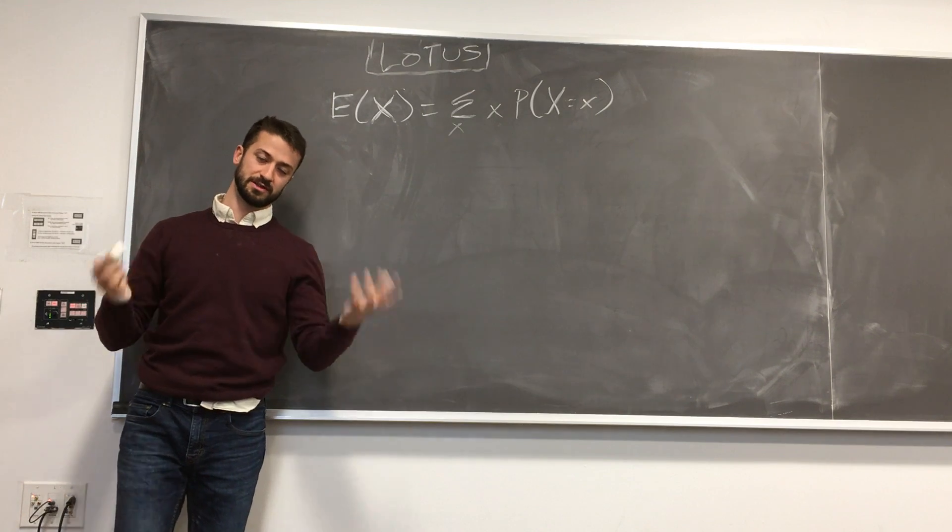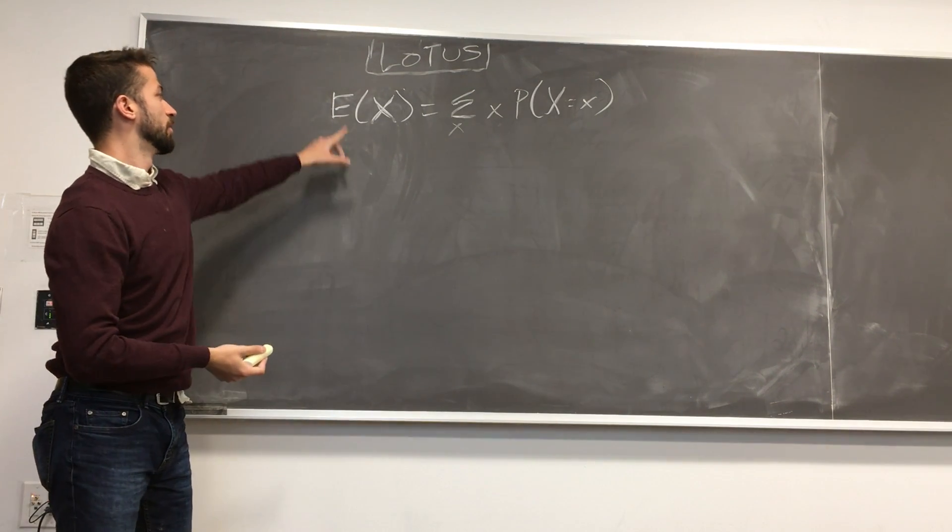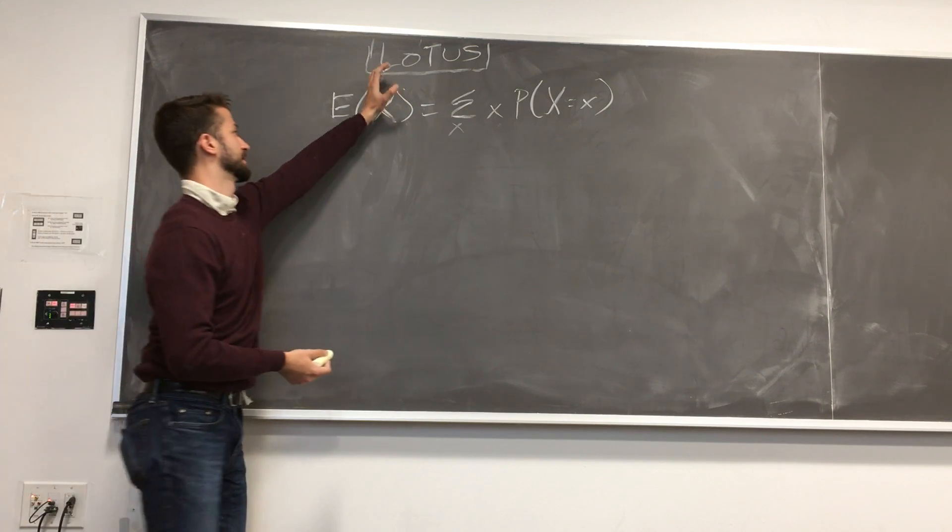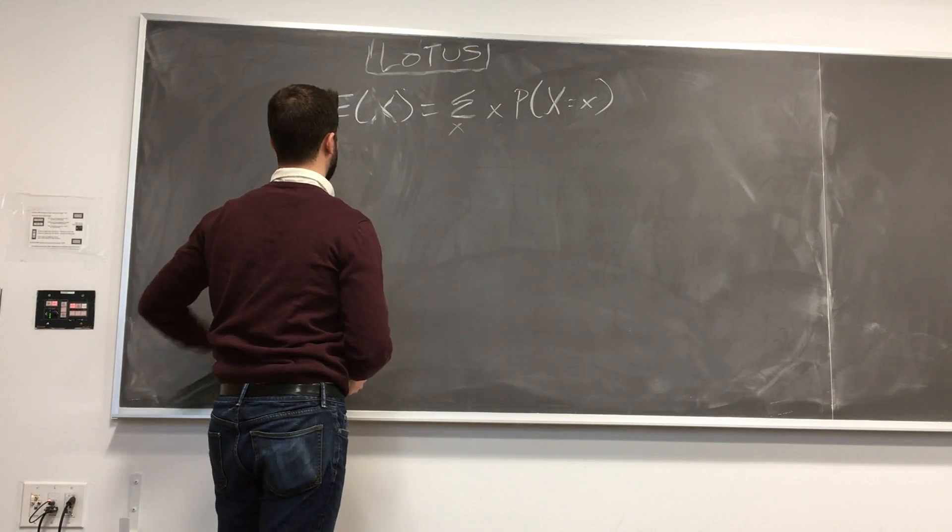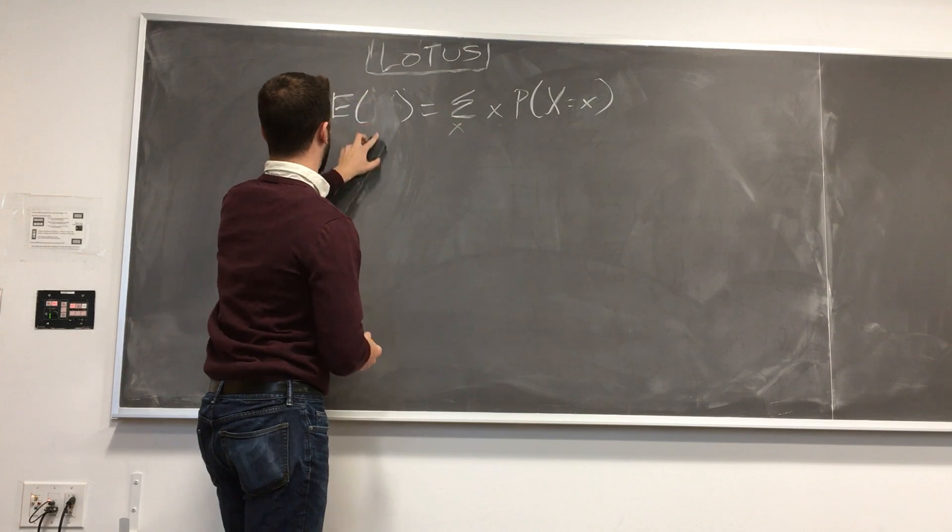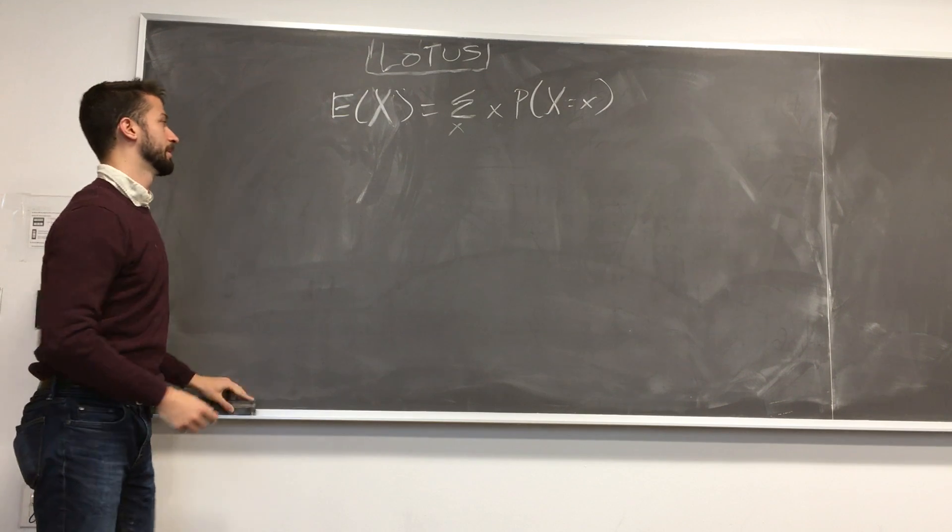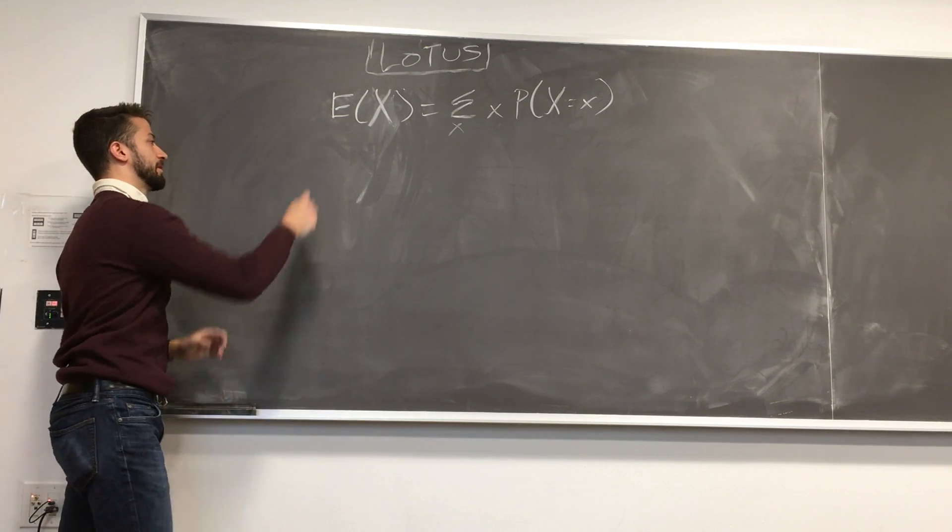what is random and what is not random. And the random stuff here is the capital X's. Make sure that's clear that that's a capital X. Capital X's are random. Lowercase x's are our specific points. Okay. So that's the simple form we've seen of Lotus.